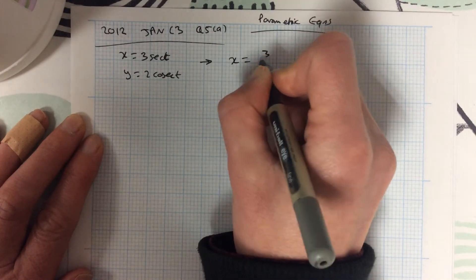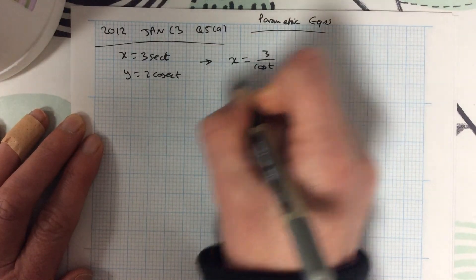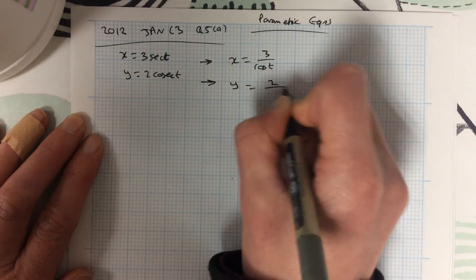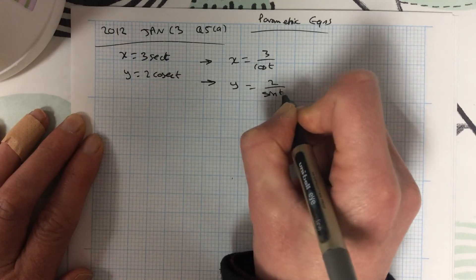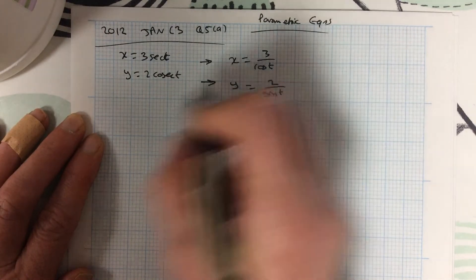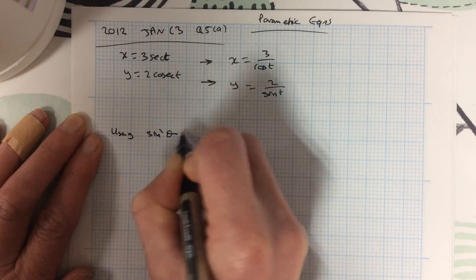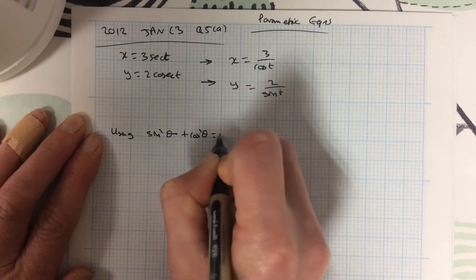So x equals 3 sec is the same as over cos. And cosec is the same as 1 over sine. I know a link between cos and sine easily enough. So I could be using sine squared plus cos squared equals 1.